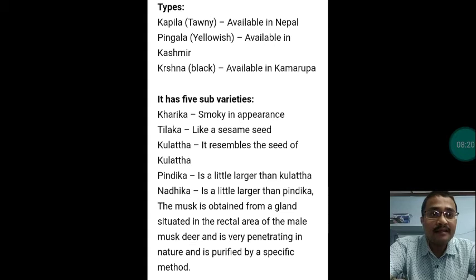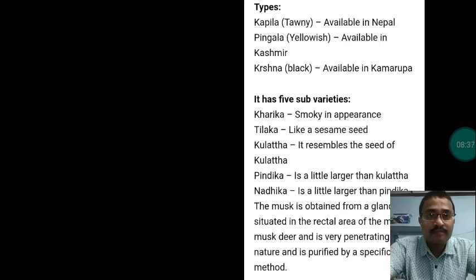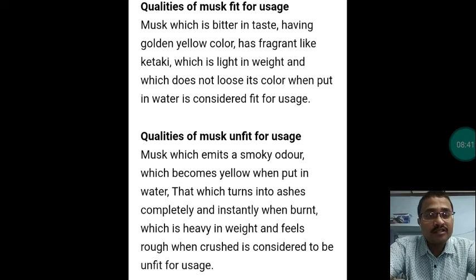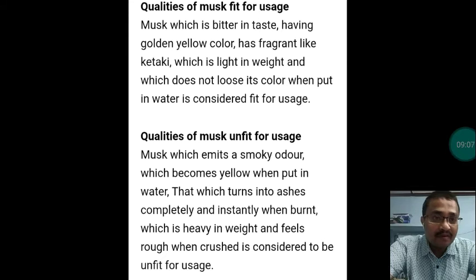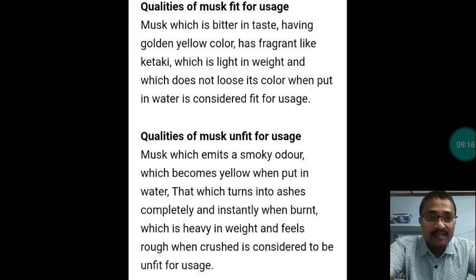The musk is obtained from a gland situated in the rectal area of the male musk deer and is very penetrating in nature, purified by a specific method. Musk which is bitter in taste, having golden-yellow color, fragrant like Ketaki, light in weight, and which does not lose its color when put in water is considered fit for use. Musk unfit for use emits a smoky odor, becomes yellow when put in water, turns to ashes completely when burned, is heavy in weight, and feels rough.